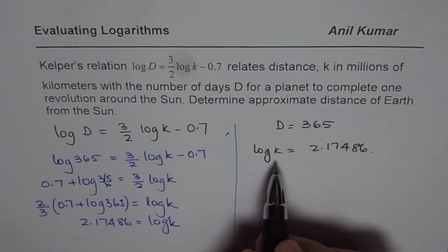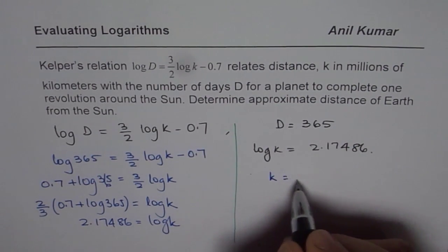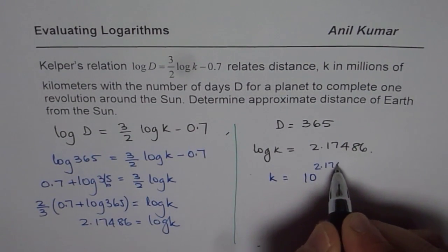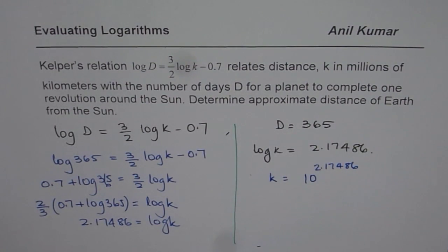This is to the base 10. We can write it in exponential form. So we get k equals 10 to the power of 2.17486. Remember, this is how many kilometers? Millions of kilometers.